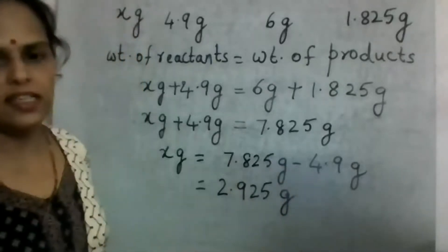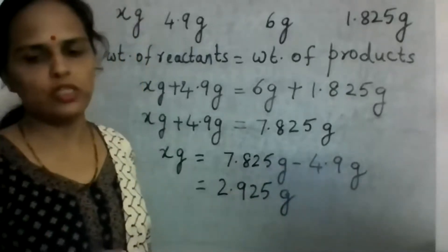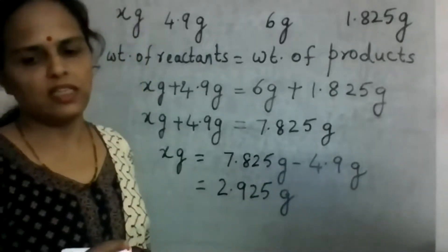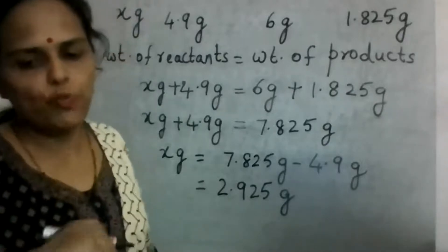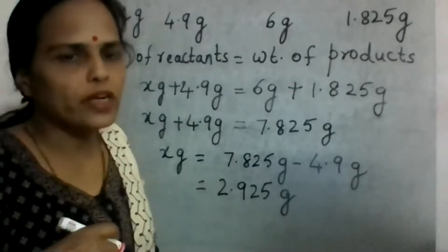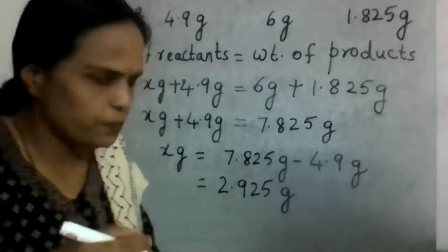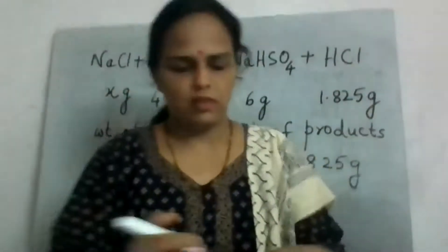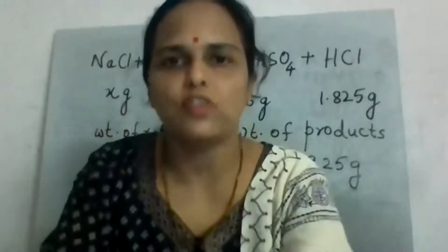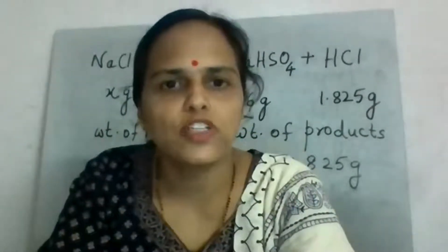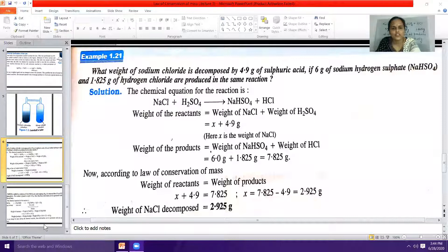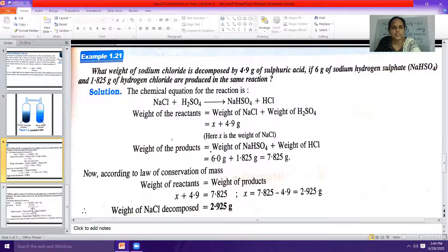So the weight of NaCl decomposed is equal to 2.925 grams. This is how you solve questions related to the law of conservation of mass. Now let us see the second problem.